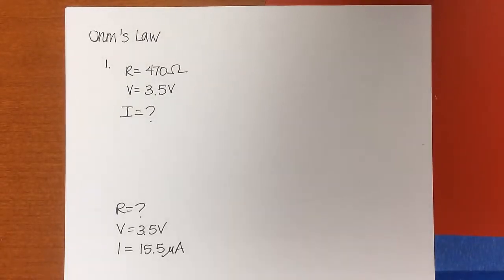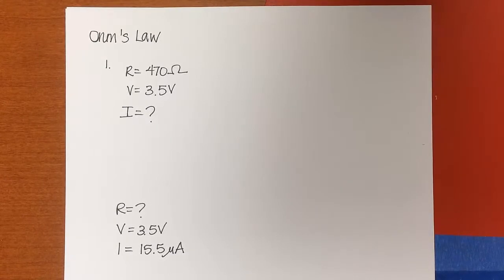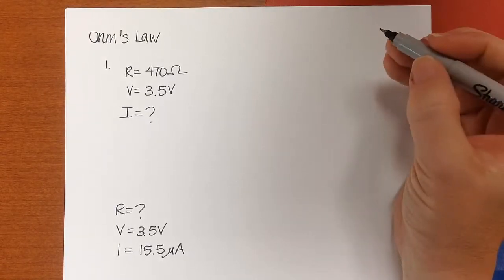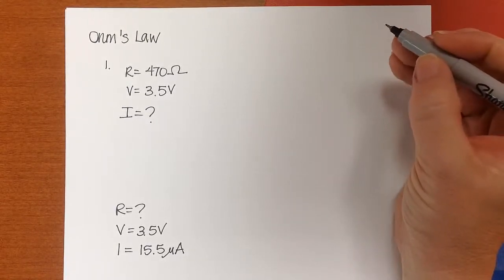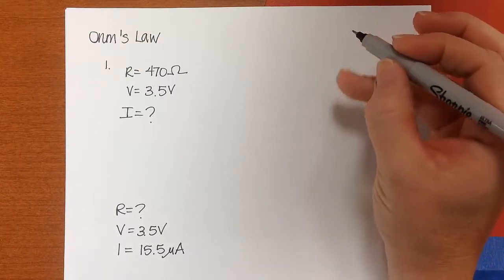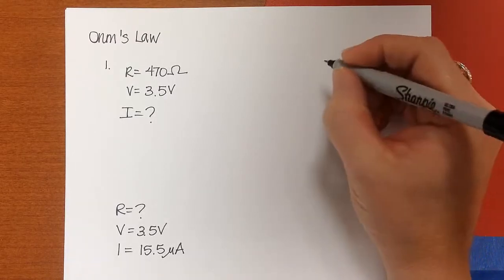Okay, I just wanted to actually work a few of the Ohm's Law calculations for you. On this one we have R is 470 Ohms, V equals 3.5 volts, and I is the unknown.